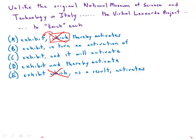When we look at answer choice B, we get 'in turn, an activation of' — what a disaster that is. As a general rule, when you have a choice between a word appearing in verb form — 'activate' — or noun form — 'activation' — the GMAT prefers the word in verb form because, of course, that's more direct, that's more active.